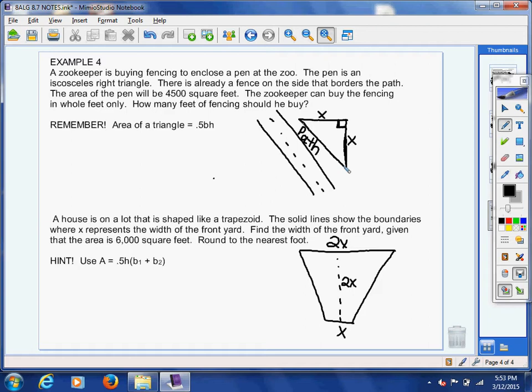Now there's already a fence on the side that borders the path. So we already have fencing here. So I'm going to kind of squiggle through that so maybe you can imagine that to be your fence. And we need fencing on the other two sides. So we know that the area, they gave us the area, they said the area is 4,500 square feet.